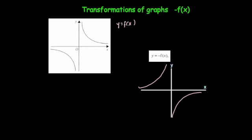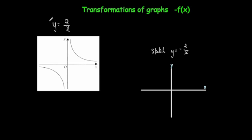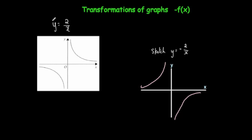Sometimes you're given the equation of the curve rather than just f of x notation. Here we've got y equals 2 over x, and you've been asked to draw y equals minus 2 over x. Notice they've just put a minus sign in front of the function — that means we do the same transformation and reflect in the x-axis. So the graph would look like this. If any question gives you a function with a minus sign in front of the whole thing, the effect is that it's reflected in the x-axis.